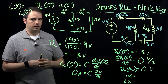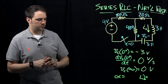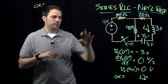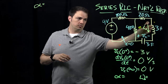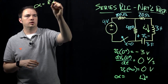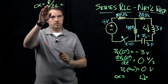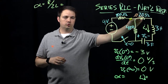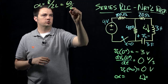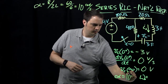Now we evaluate the two frequencies. For the NEPR frequency alpha in the series configuration, after opening the switch the resistors, inductor, and capacitor are all in series. The formula is alpha equals R over 2L. The resistance R is the combined 40-ohm and 20-ohm resistors, giving 60 ohms. So alpha equals 60 over 2 times the inductance of 3, which is 60, giving a value of 10 radians per second.